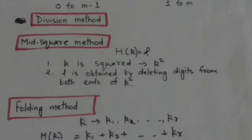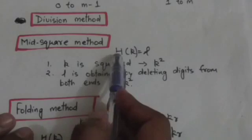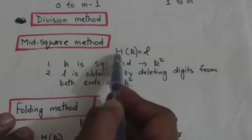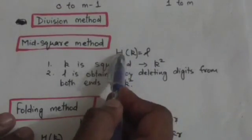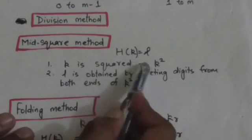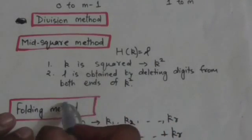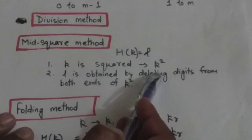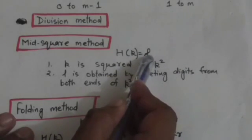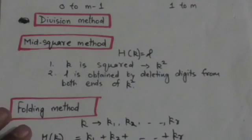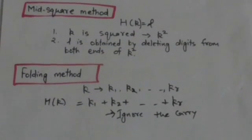The next method is the mid-square method. In the mid-square method, the hash function is defined by h(k) = l, where k is a key. First, the key k is squared to get k². Then, by deleting digits from both ends of k², we get l. It is emphasized that the same position of k² must be used for all the keys.